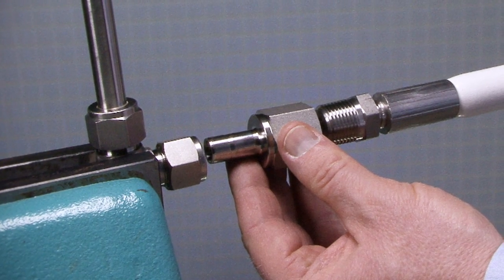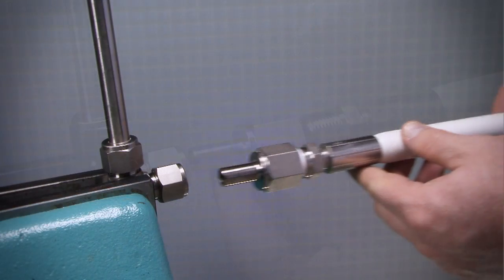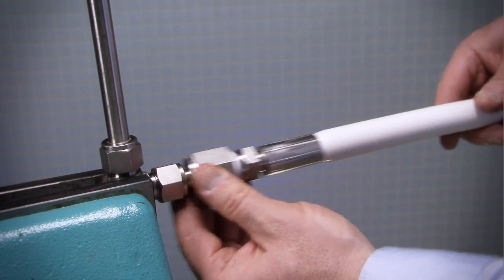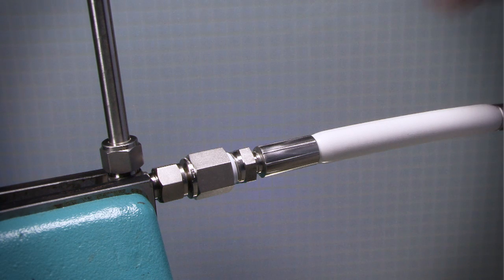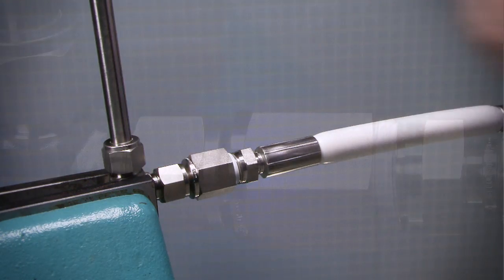Install the end connection opposite the tube adapter first. Insert the tube adapter into the Swagelok tube fitting. Make sure that the tube adapter rests firmly on the shoulder of the tube fitting body and that the nut is finger tight.